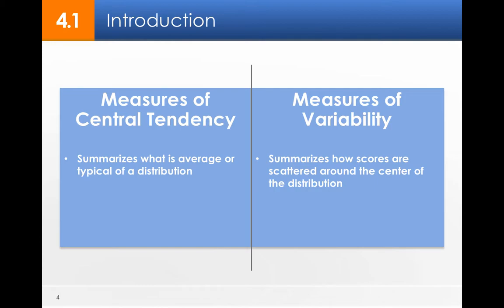Remember when we talked about measures of central tendency last chapter, chapter 3. That's talking about what's average or typical of a distribution. Variability is going to talk about how those scores are scattered around that center of that distribution.